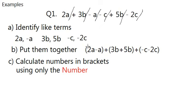So this is 2A minus A, which is 1A, plus 3B plus 5B, which is 3 plus 5, 8B. Then, at last, plus minus C minus 2C, which is minus 3C.